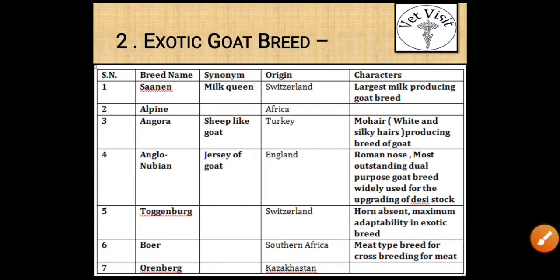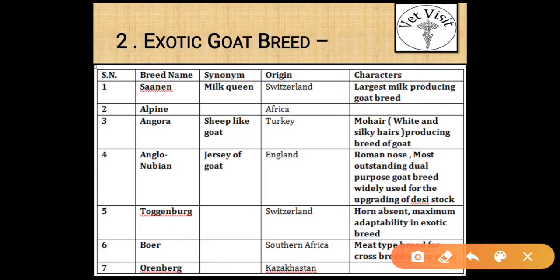Exotic goat breeds: the first breed is Sanen. Its synonym is 'Milk Queen' — mark it as star. Its origin is Switzerland, and its character is that it is the largest milk producing goat breed.